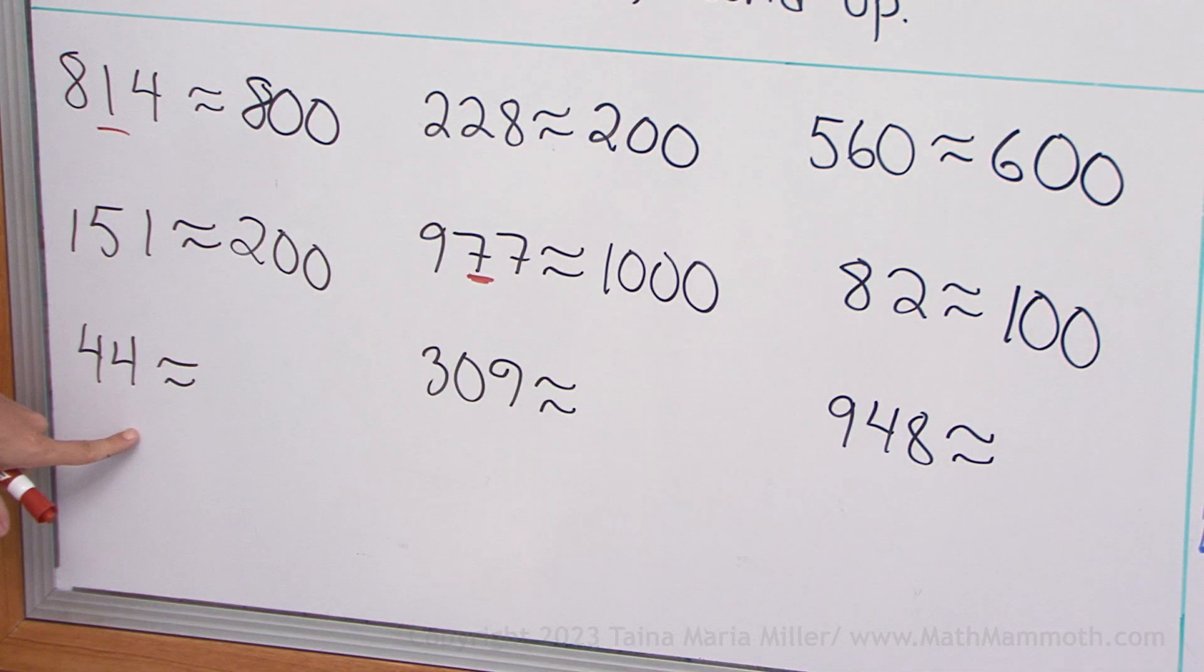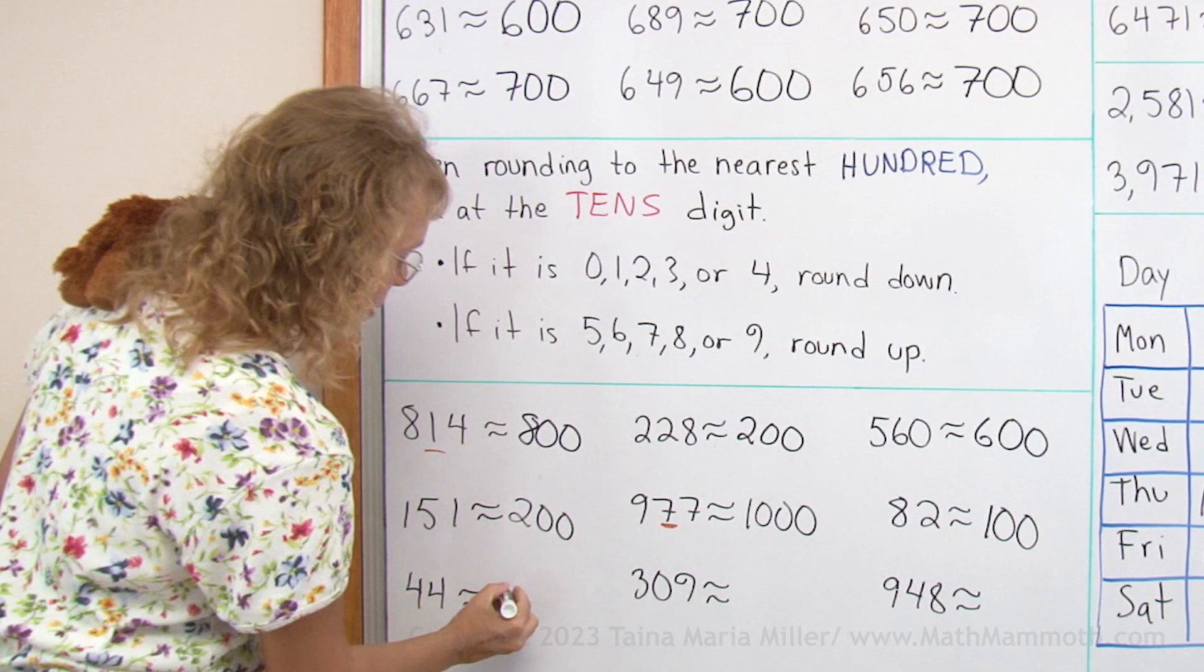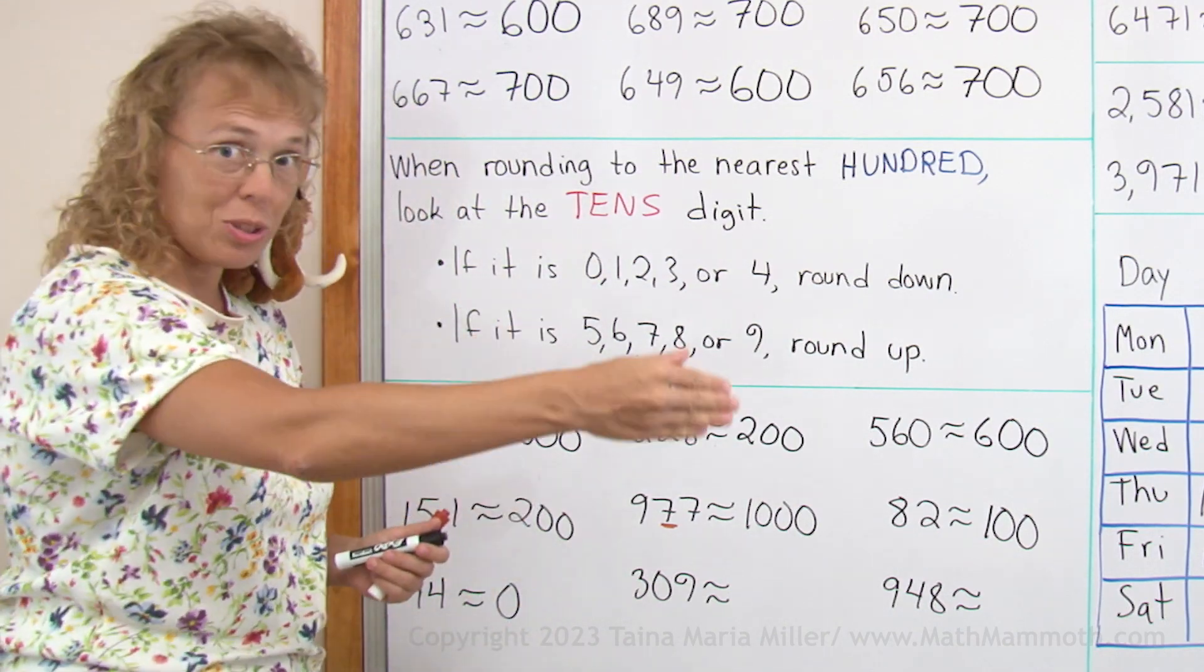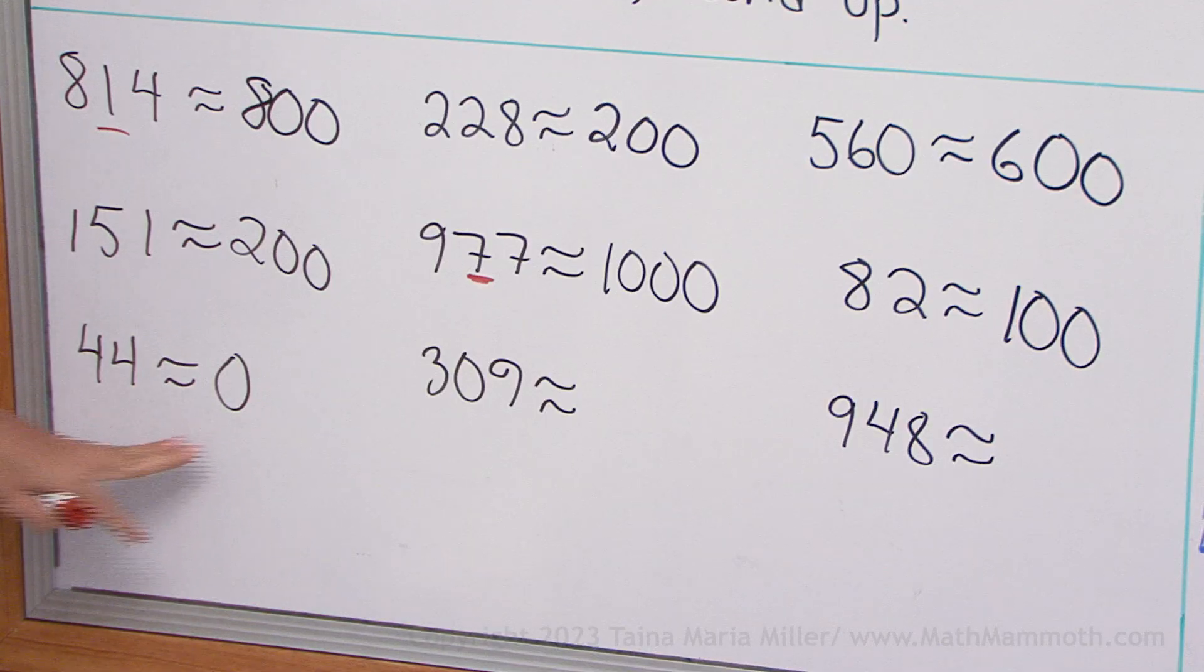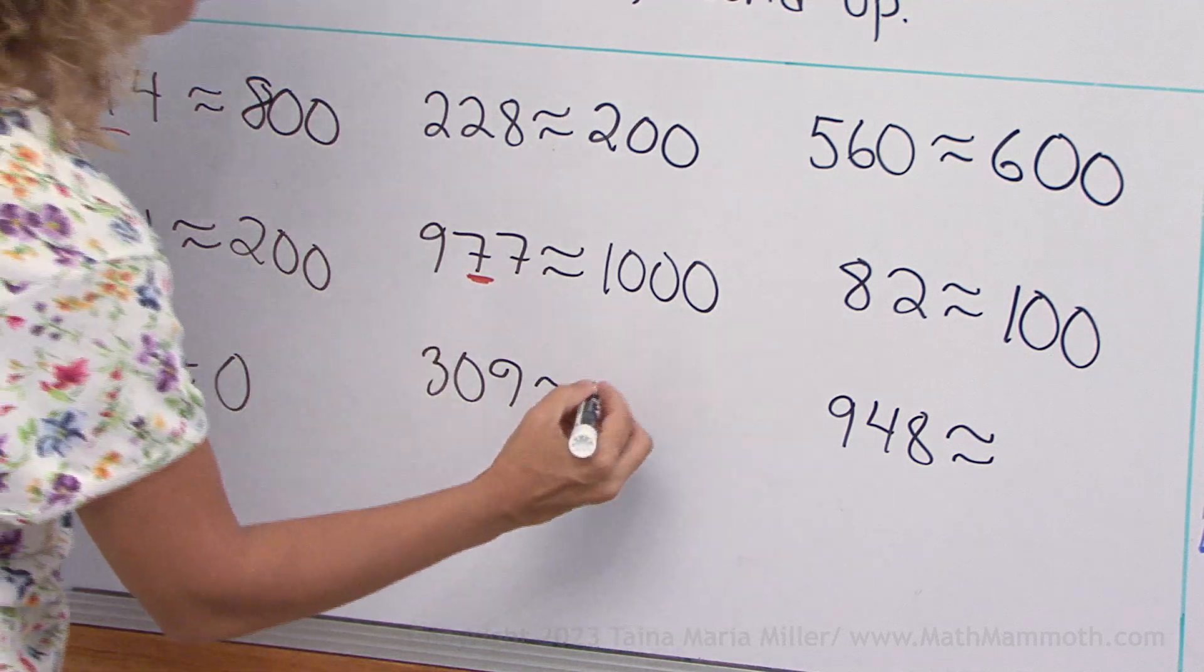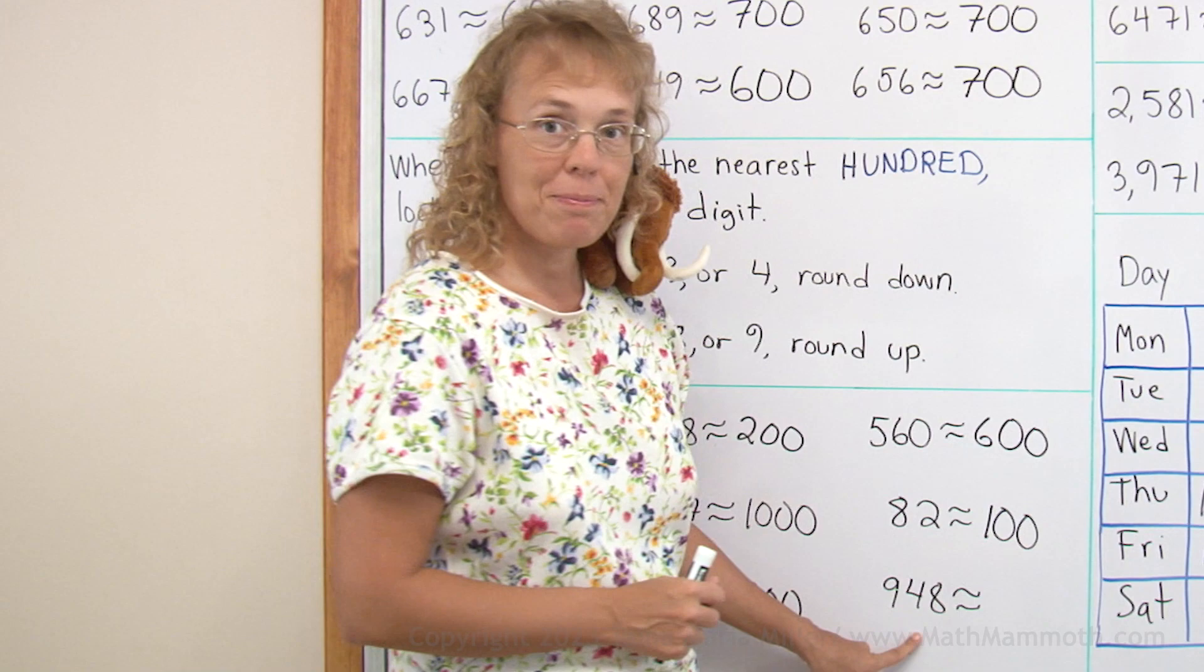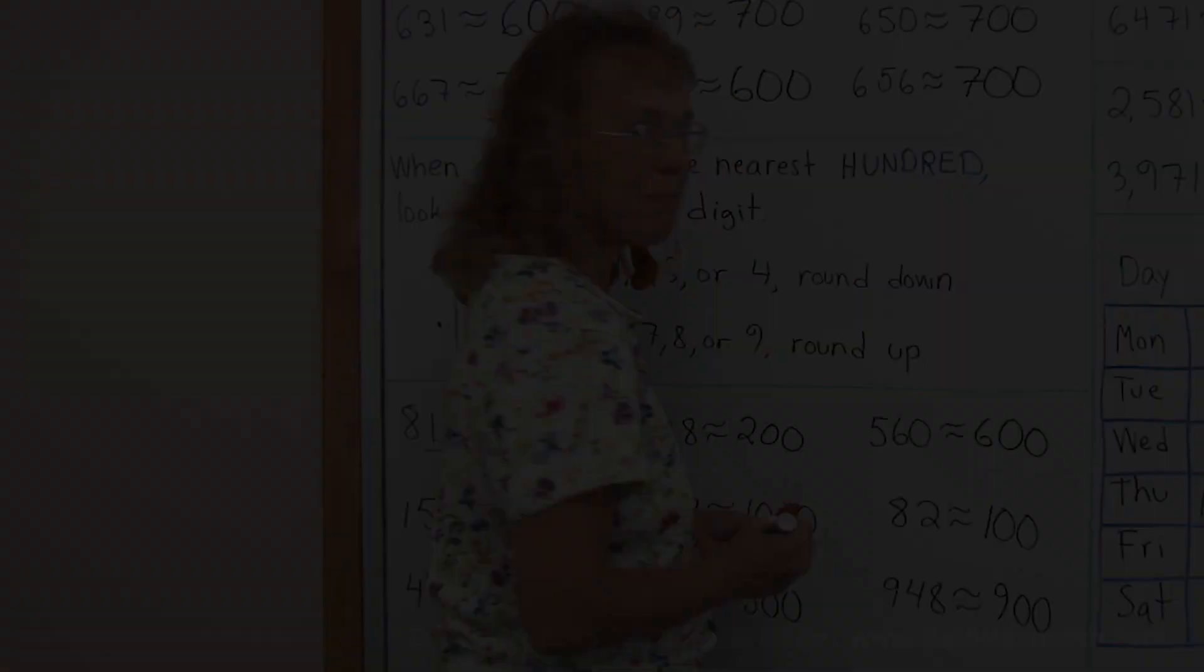44. There's 4 tens. You round down to the previous whole hundred, which is actually 0. Because the whole hundreds are 0, 100, 200, 300. 0 is one of the whole hundreds. So this one gets rounded down to 0. 309. That would be closest to 300, right? 948 would be closest to 900.